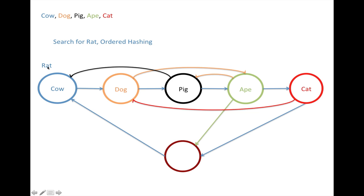So we basically stop when we see an element that is smaller than the element that we're looking for. So here we have rat and it's larger than cow. So immediately we know that there is no rat in the table.